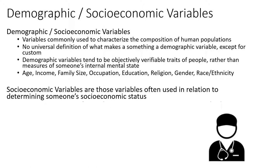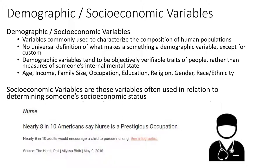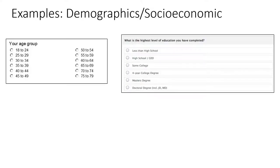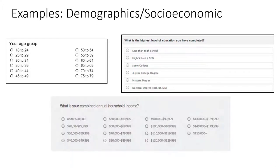The idea is that if you set aside income or educational status and focus strictly on occupation, different occupations have different levels of social prestige. For example, nurses in the United States are considered one of the most respected positions in the country. So individuals with similar income and educational attainment in a different occupation wouldn't quite be at the same level due to the prestige associated with nursing. Here we have a survey measuring age, highest level of education completed, and combined annual household income — all three are demographic measures, with education and income used to determine socioeconomic status.